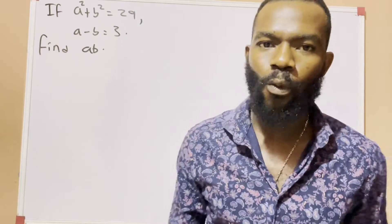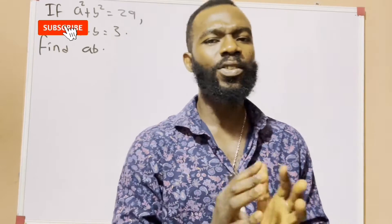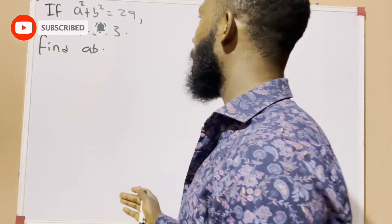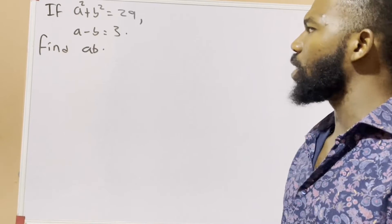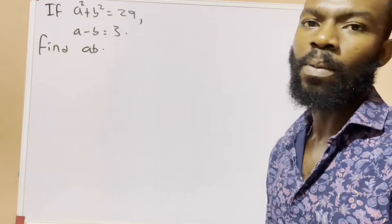Hello my lovely viewers, welcome again to Math Minus 9. I'm your favorite presenter Jeff Ino. Today we have a question: If a² + b² = 29 and a - b = 3, find ab. Now how do we go about solving this type of question?